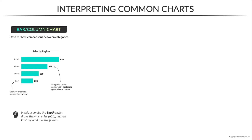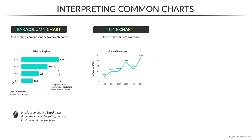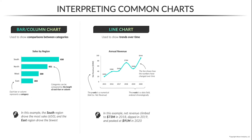Another extremely common visual is the line chart, used to show trends over time. Here's an example line chart showing annual revenue over a six-year period from 2015 through 2020. Note that the y-axis, or the vertical axis, is a numerical field — in this case, net revenue. The x-axis, or horizontal axis, is a date field ordered chronologically, and the line itself shows how those values have changed over time. In this example, we see that revenue climbed to 73 million in 2018, dipped to 50 million in 2019, and peaked at 91 million in 2020.